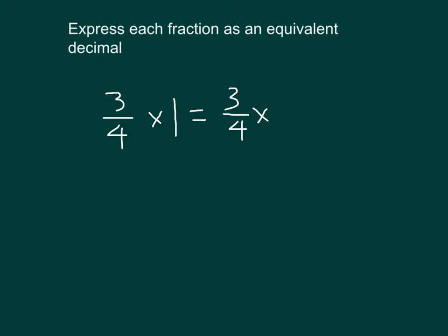So I want to get tenths, hundredths, or thousandths so that it's easy to write my decimal equivalent. In this case, I know that 4 times 25 is 100, so I will choose 25 twenty-fifths. And then I can continue to do my work.